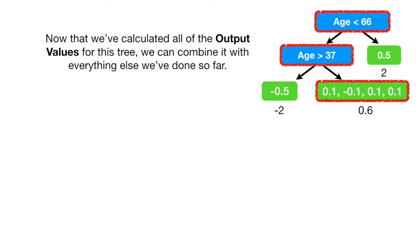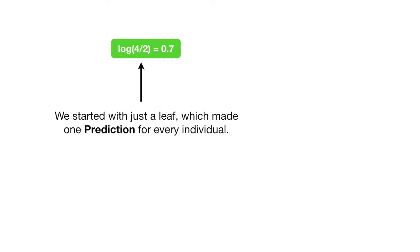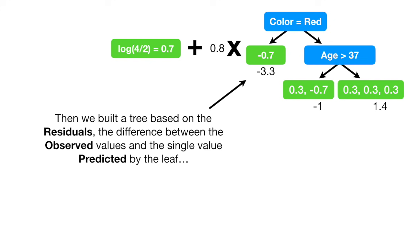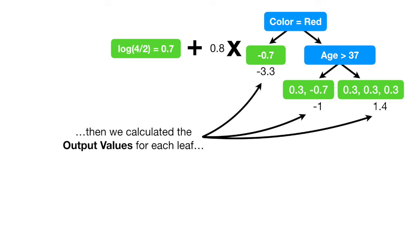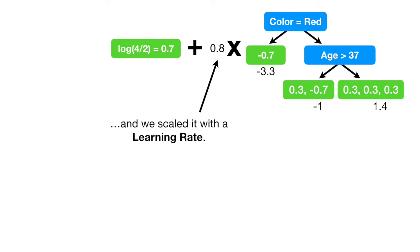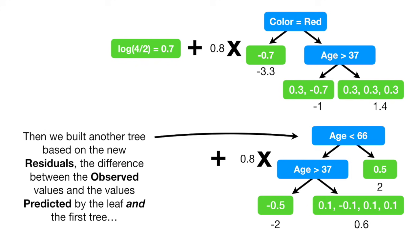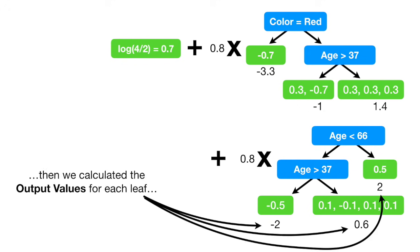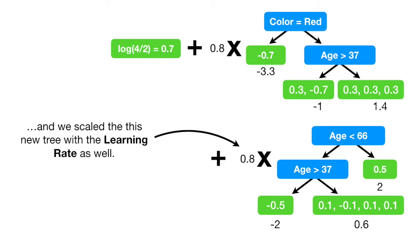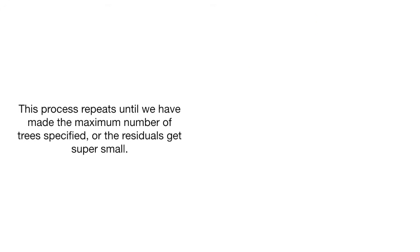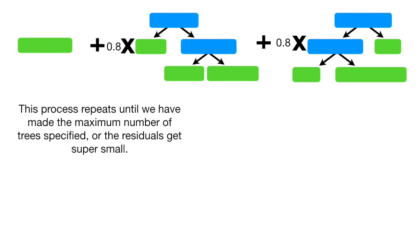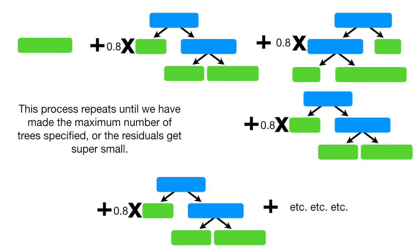Bam! Now that we've calculated all of the output values for this tree, we can combine it with everything else we've done so far. We started with just a leaf, which made one prediction for every individual. Then we built a tree based on the residuals — the difference between the observed values and the single value predicted by the leaf. Then we calculated the output values for each leaf and scaled it with a learning rate. This process repeats until we have made the maximum number of trees specified, or the residuals get super small. Double bam!